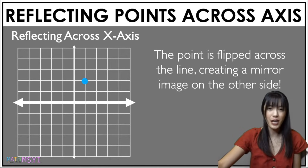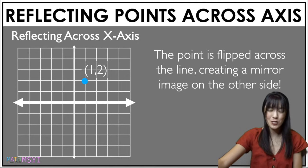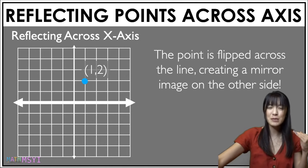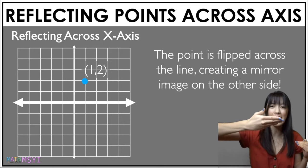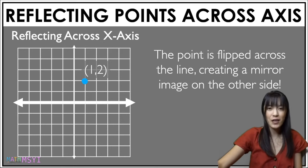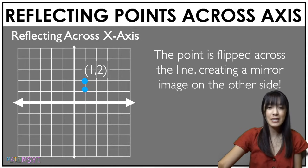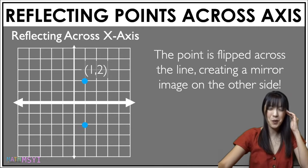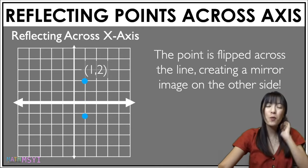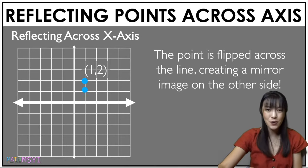This point is at 1, 2 and when I reflect this point across my x-axis, my x value will stay the same and my y value will become the opposite. Let's look at the animation of how that point is reflected — the new coordinate point is going to be 1, negative 2.